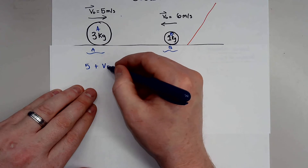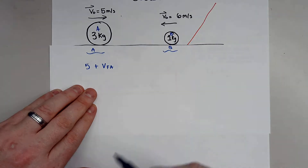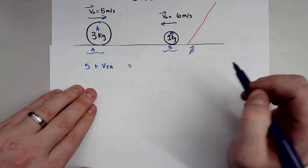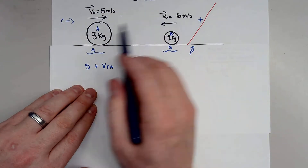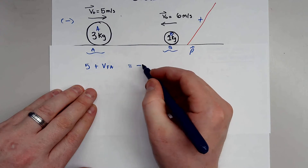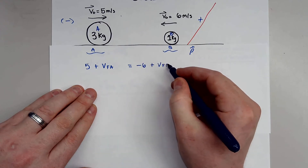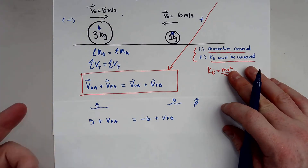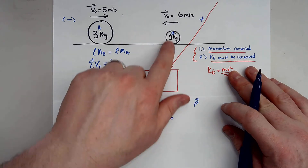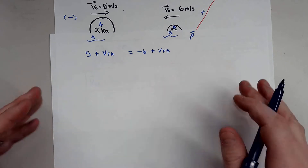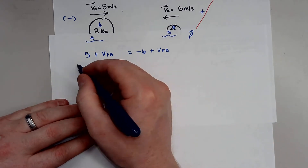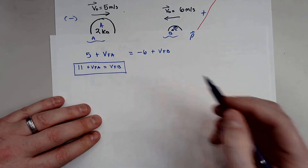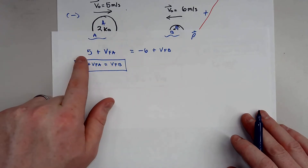So: velocity initial of A plus velocity final of A equals velocity initial of B plus velocity final of B. Remember, momentum is a vector, so direction matters. Anything going right is positive, anything going left is negative. The velocity initial of A is 5, and the velocity initial of B is negative 6. Solving for VFB gives us: 11 plus VFA equals VFB. That's our shortcut equation.